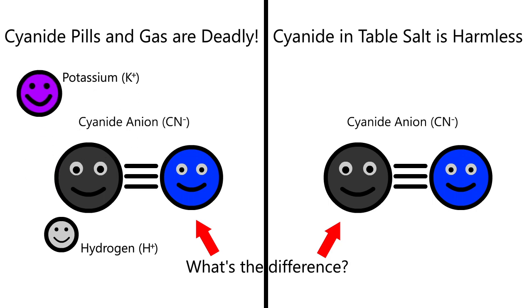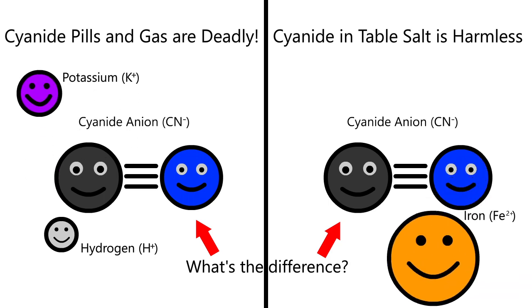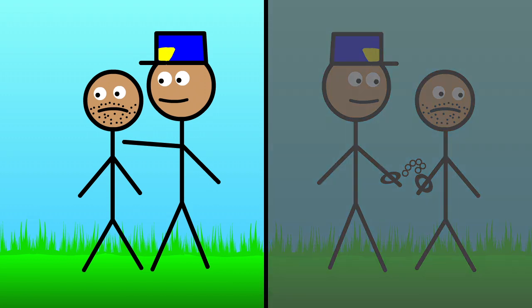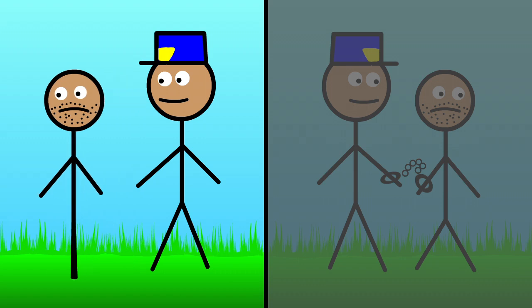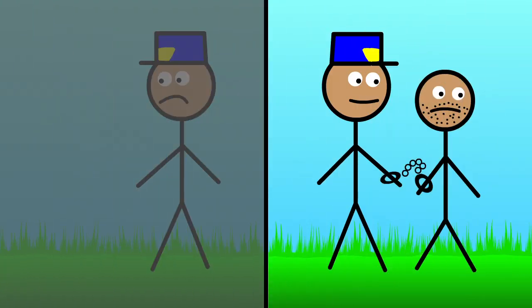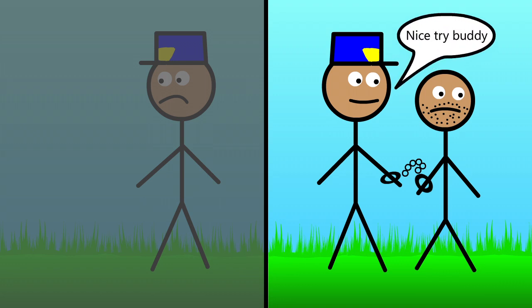So why is cyanide so deadly in the former two cases and harmless in the latter if it has the same structure in both? Here it has to do with the surrounding atoms to which cyanide is bound. Here's an analogy: consider a situation where a police officer has found a deadly criminal. He could just hold his hand and walk him to the station, but the criminal could get away pretty easily. Instead, he could use a pair of handcuffs — with that, there's hardly a chance of the criminal escaping.